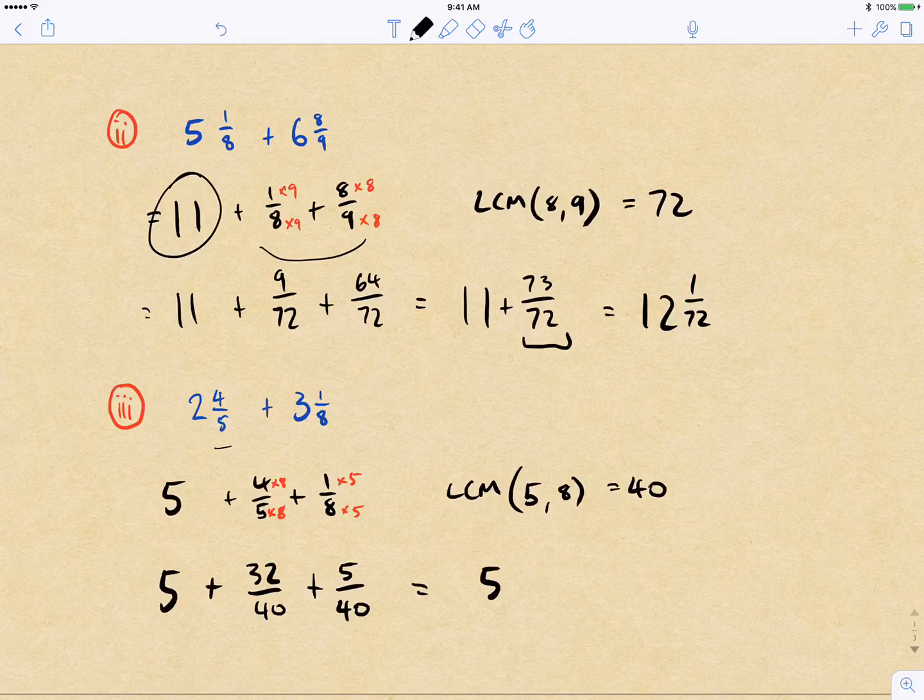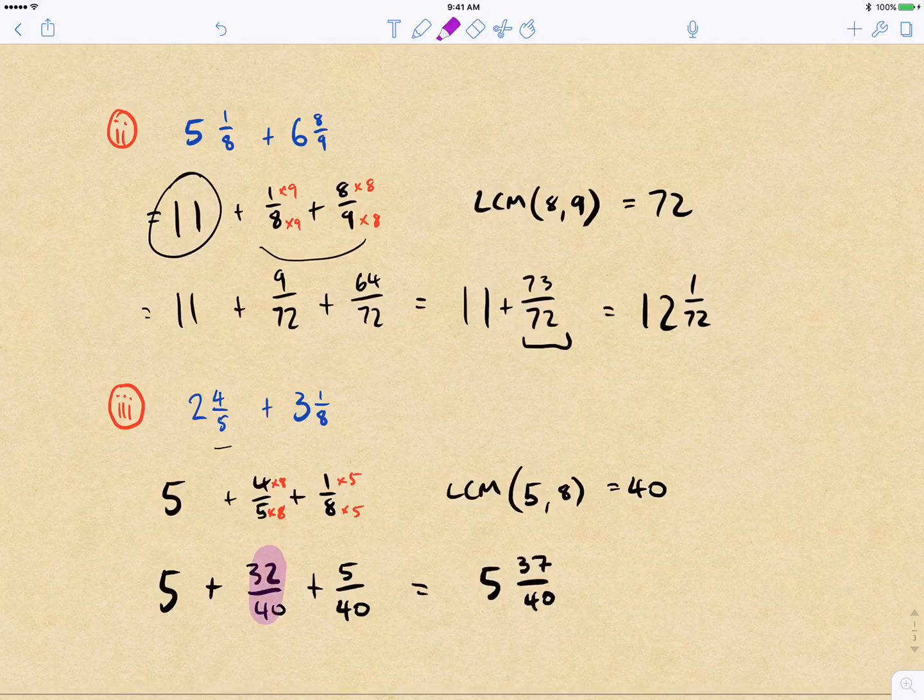And so in this case, we just get 5 and 37 fortieths. So you notice here, we don't have to do any simplification at the end, we don't touch improper fractions at all, we just, because our two fractions added together don't give us a number greater than 1.